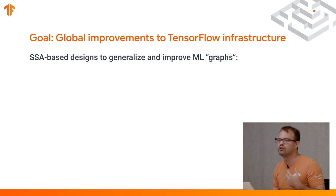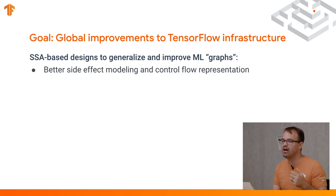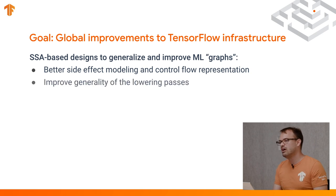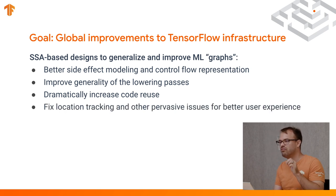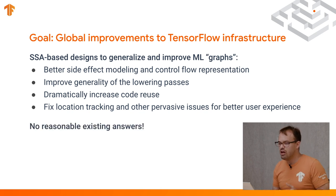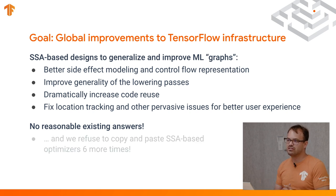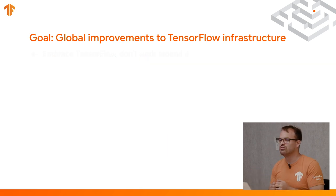So with that, the goal of MLIR is to enable global improvement to infrastructure. It's an SSA-based design to generalize and improve ML graphs. We want to add better side effect modeling, control flow representation, and improve the generality of the lowering passes. We want to focus on dramatically increasing the code reuse between all these distinct paths, fix the location tracking, and other pervasive issues for better user experience — so that when a failure occurs, the traceability and debuggability is greatly improved. At the moment, we believe there's no reasonable existing answer, and we refuse to copy and paste another SSA-based optimizer six more times.